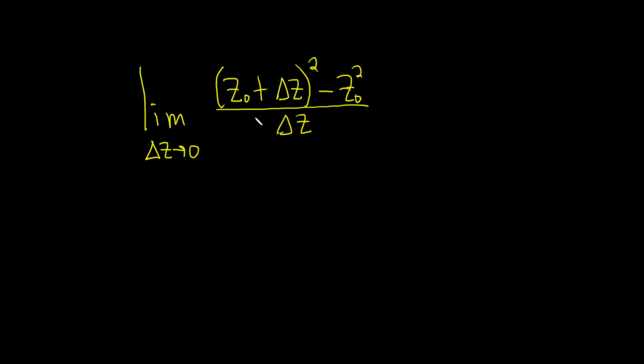In this problem, we have to find the limit as delta z approaches 0. So if we just take delta z and set it equal to 0, we end up dividing by 0, so that is not a good strategy.